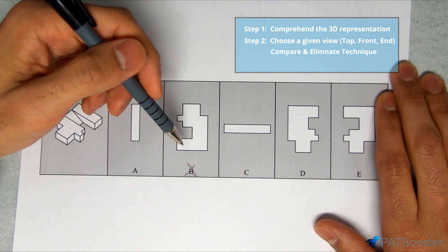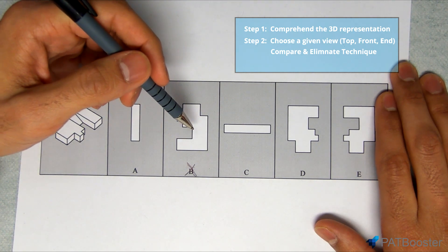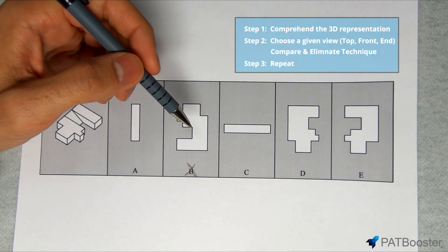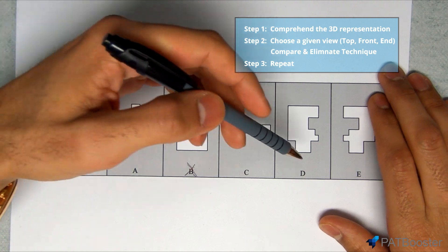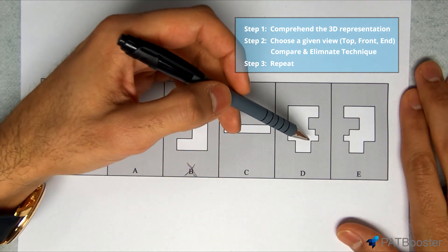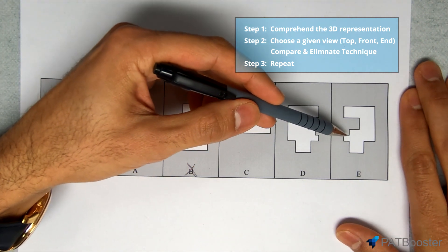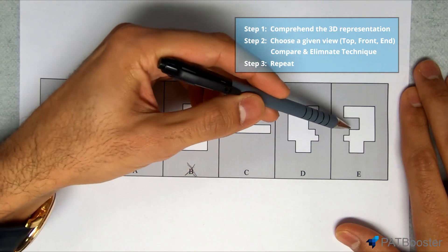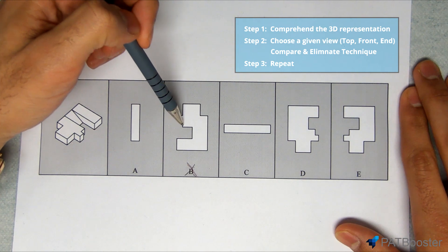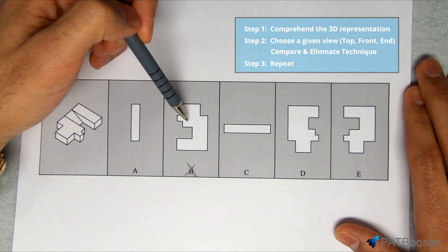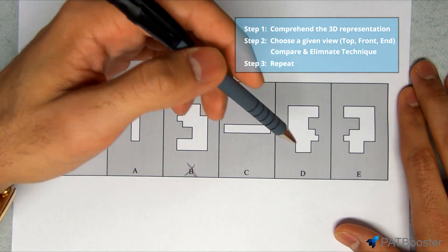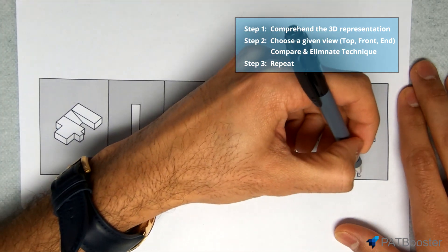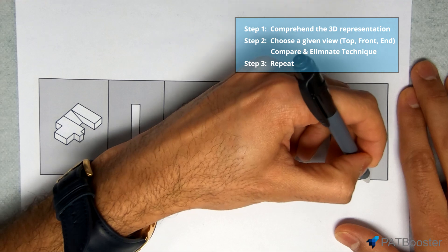So this is PAT Booster's compare and eliminate technique in all of its glory. From here you pretty much just repeat this cycle until you arrive at an answer. So now looking at D and E, look at that, it's actually the same object. Option choice E has the same mistake that was present here on B. So we actually don't really have to analyze it, we already know that that's wrong so we can automatically just cross E off.